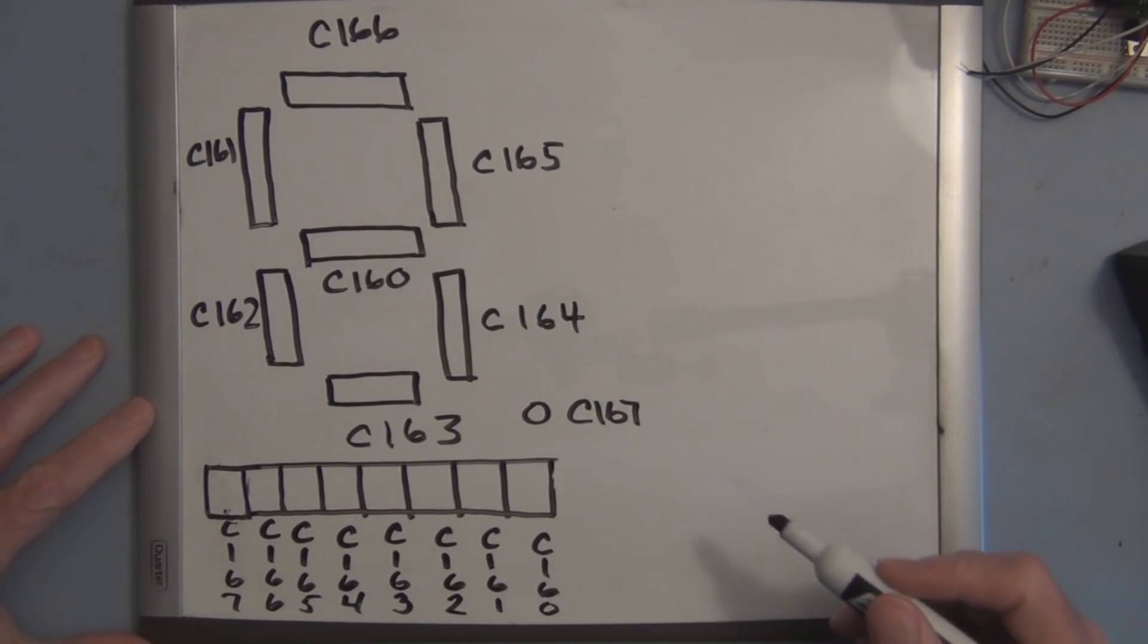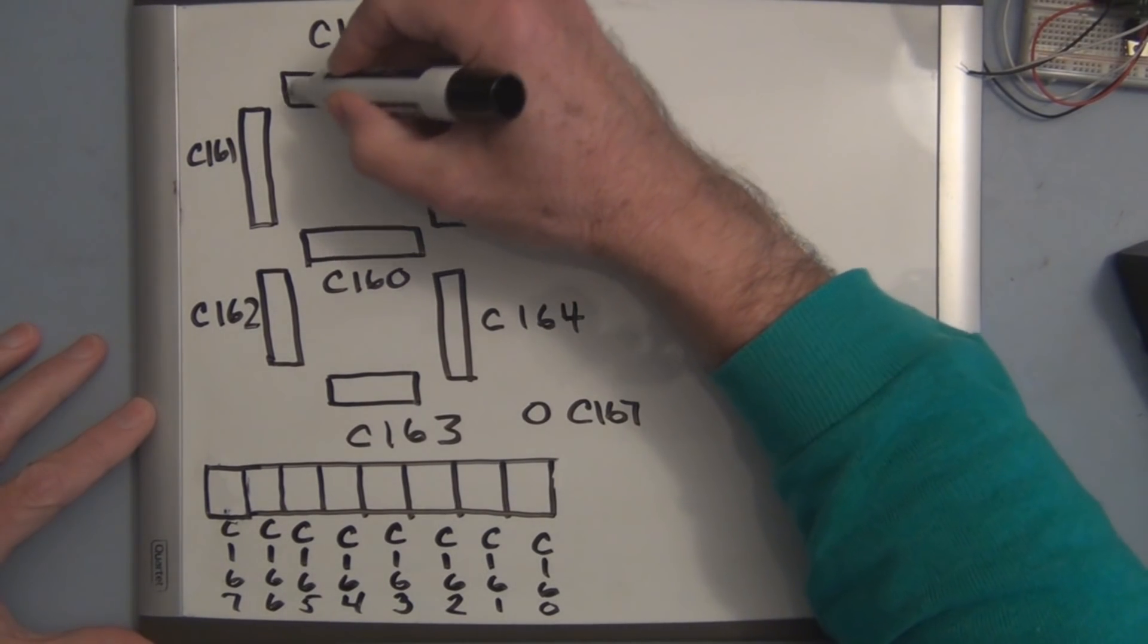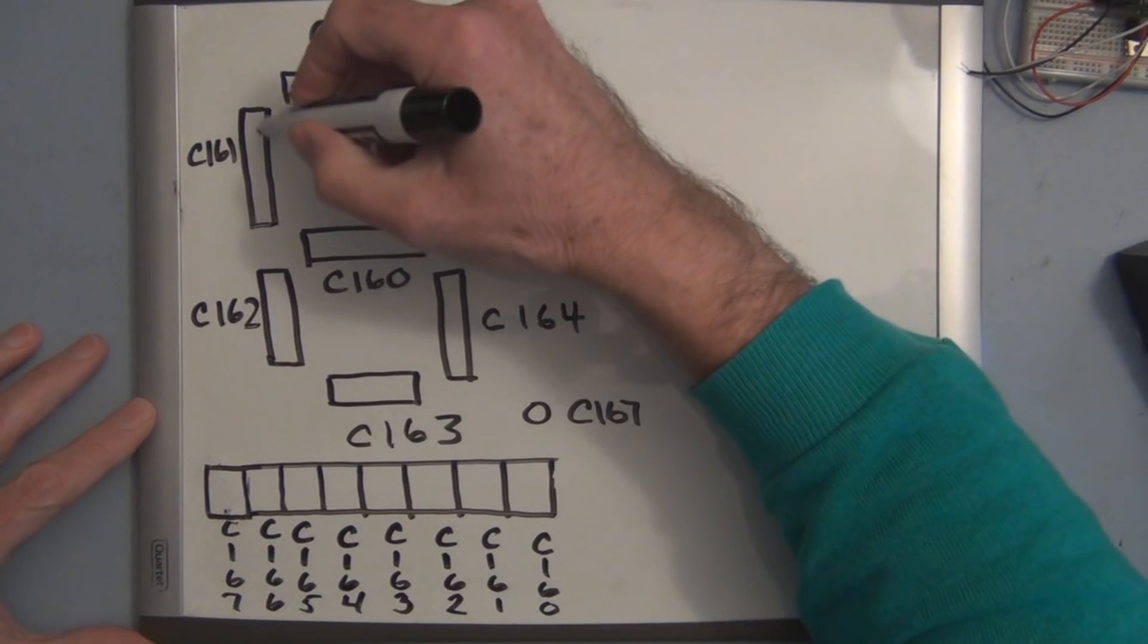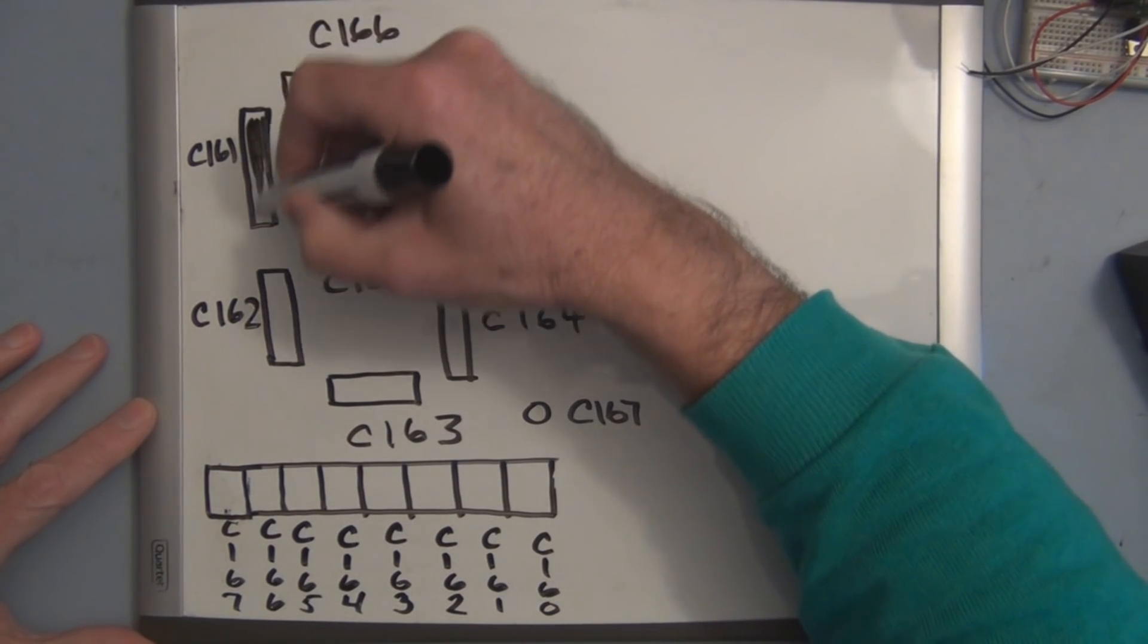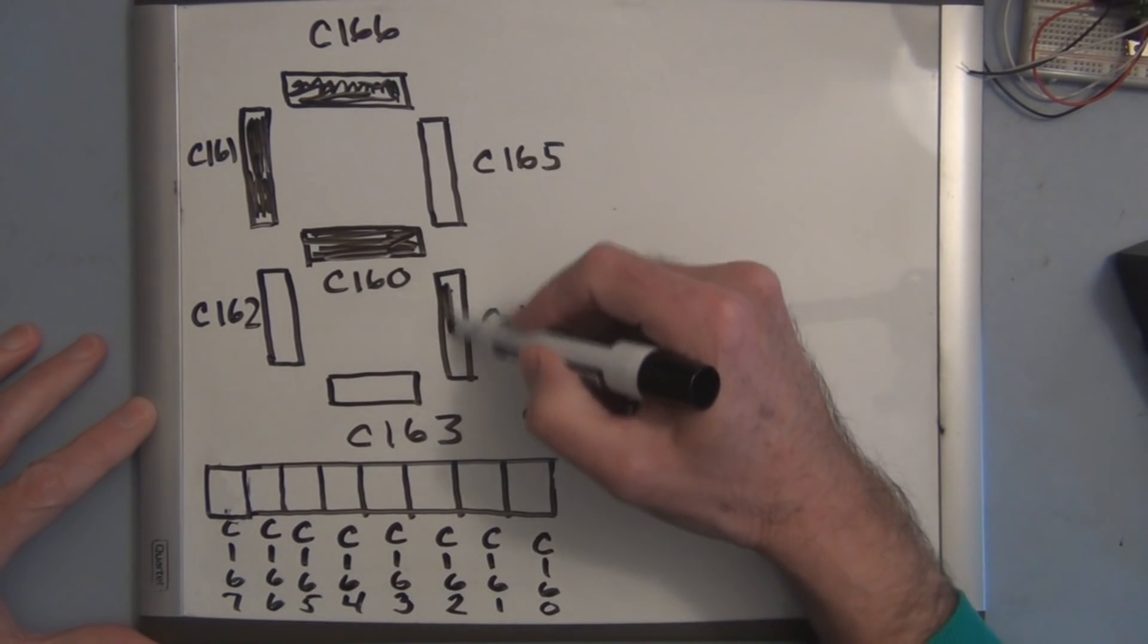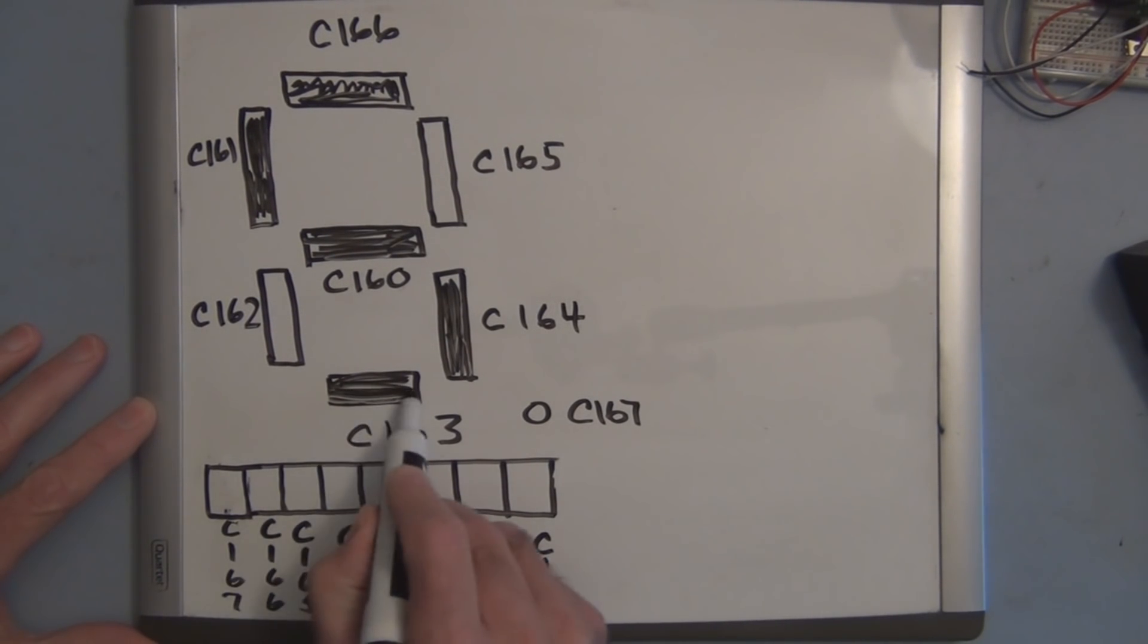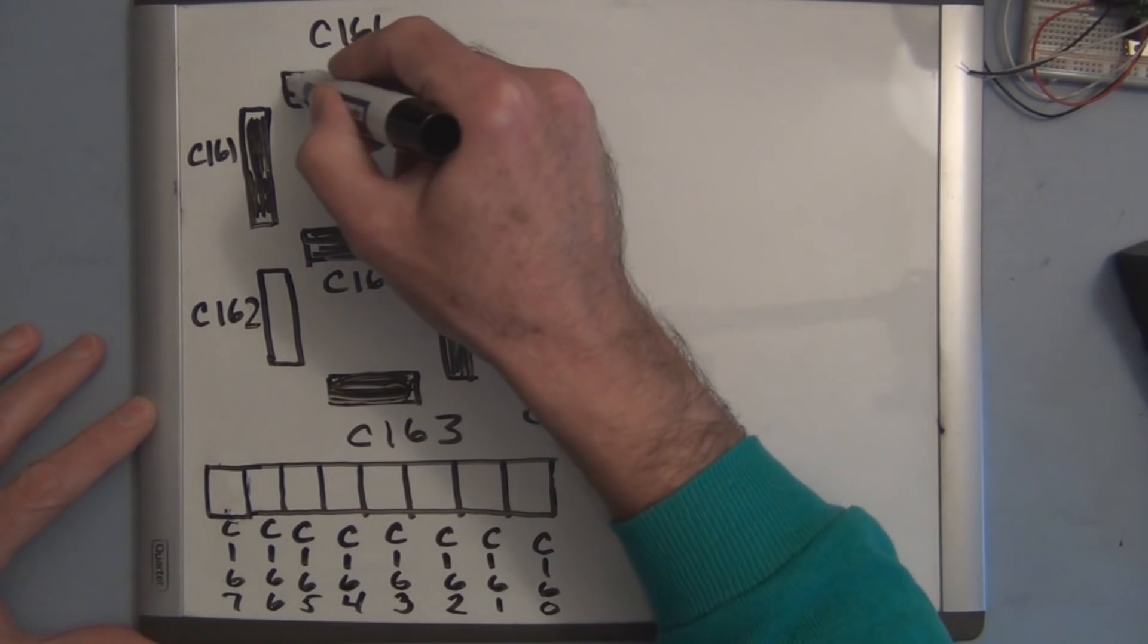So as another example, if we wanted to create the letter S, we'd have to turn on this segment, this segment here, this one, this segment, and this segment, so to resemble the letter S.